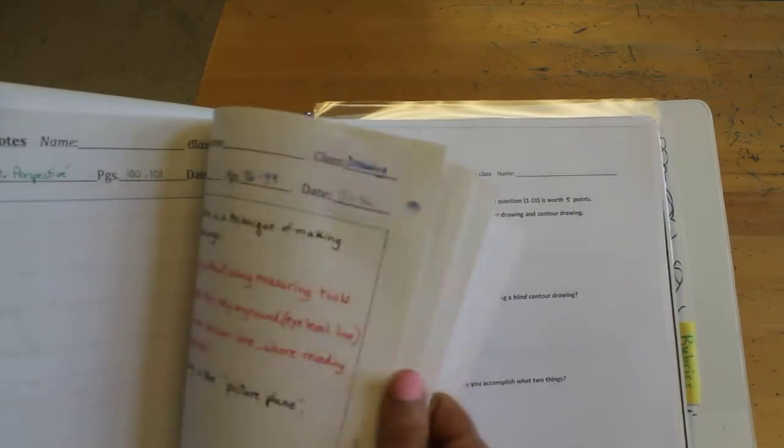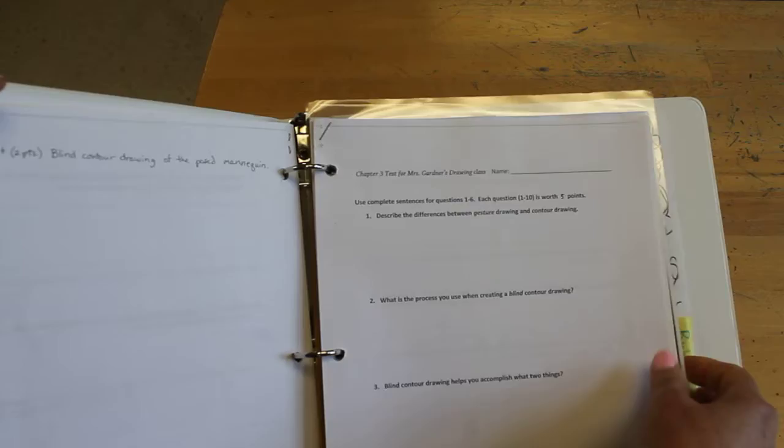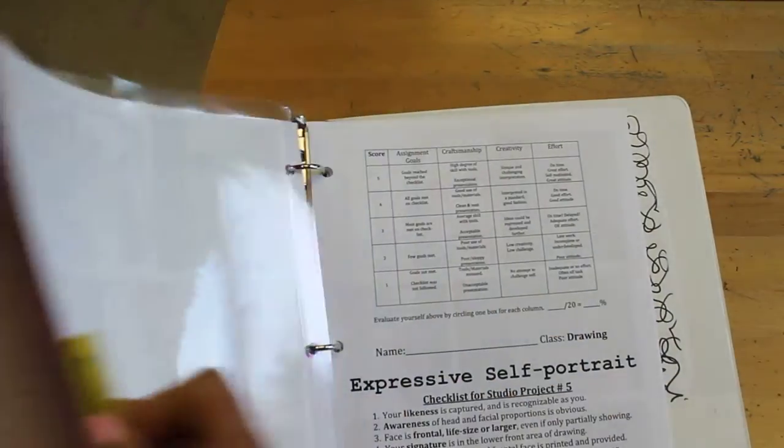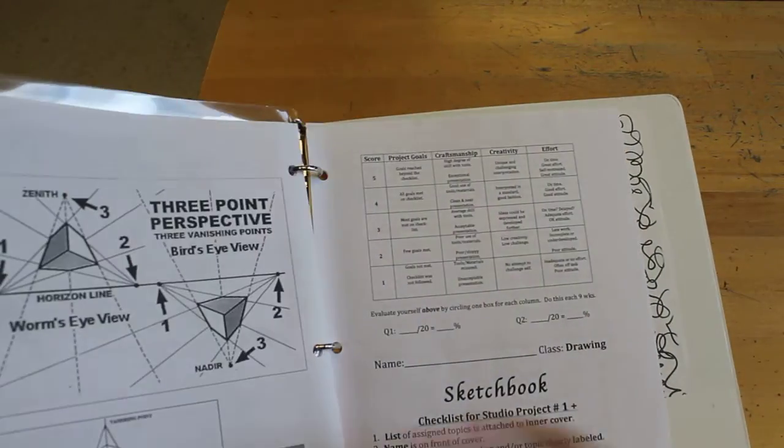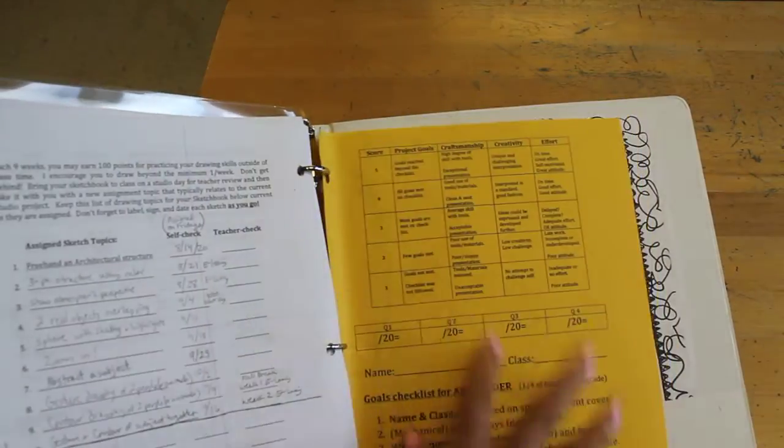And I think that would be all you'd have in a notes section for now. And then for our rubric section. Let me go to the back. Remember that golden one. That's always first there.